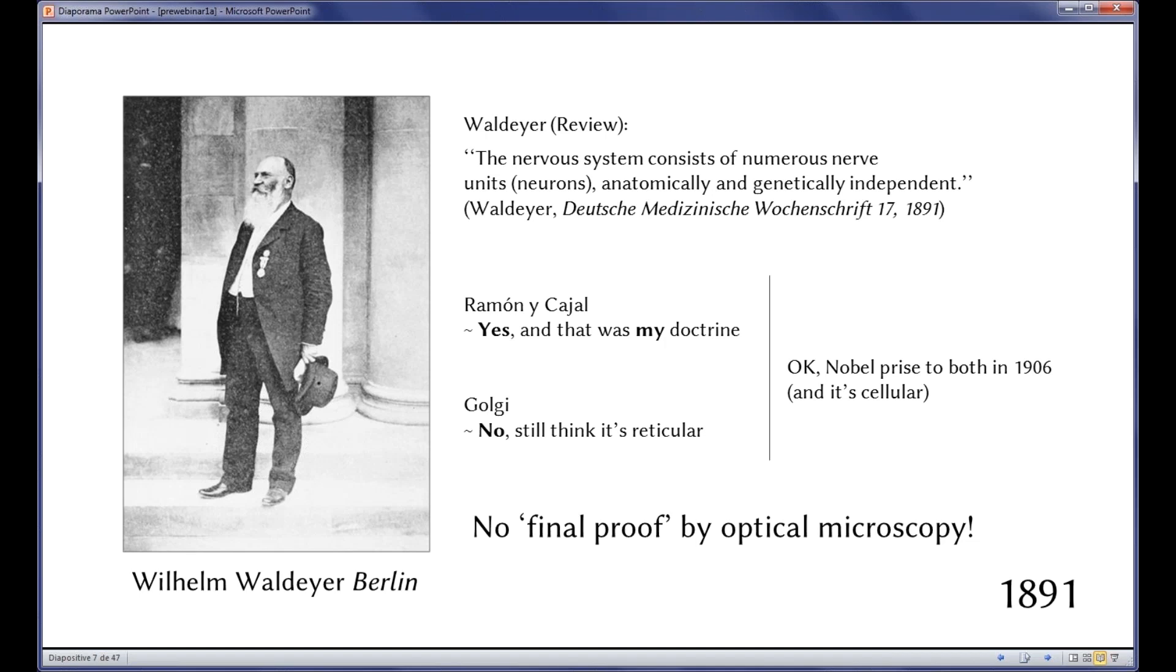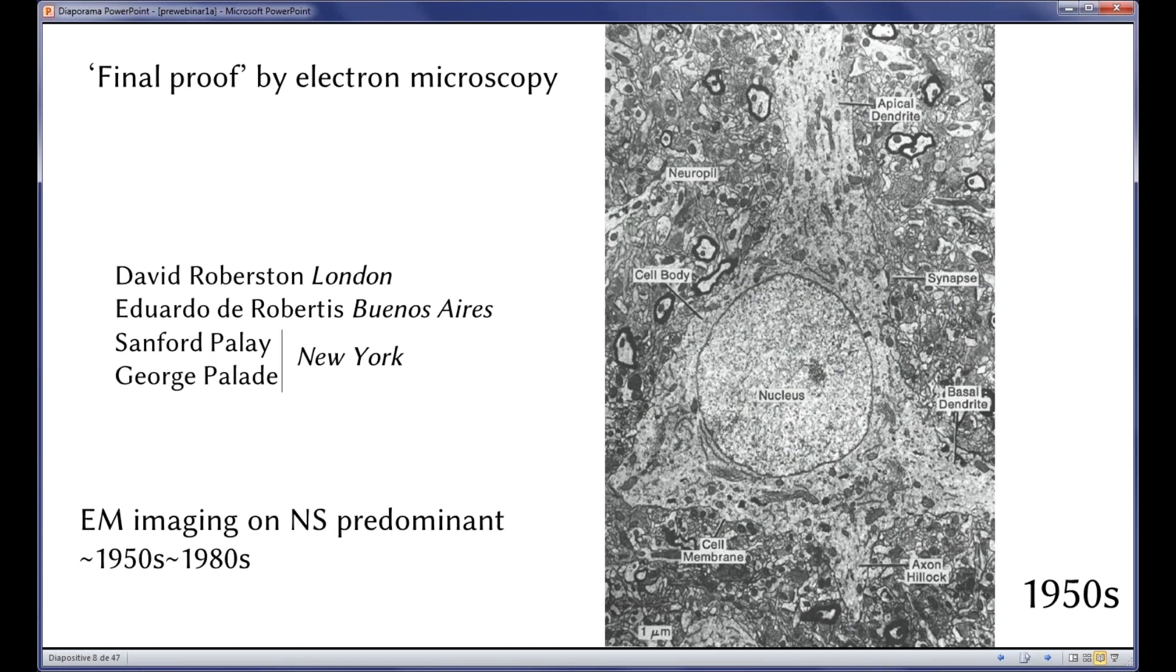Somehow Ramon y Cajal was happy because he was proven right, but he never actually forgave Waldeyer the fact that he somehow had appropriated the statement. And Golgi still thought there's no clear proof, so I still will think that's reticular. Both were awarded Nobel Prize slightly later. It was needed to wait almost more than 50 years actually for the advent of the electron microscopy.